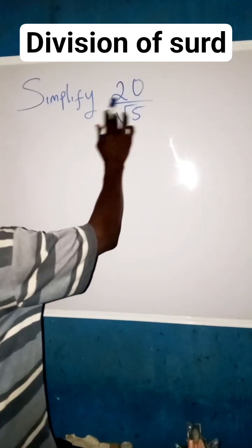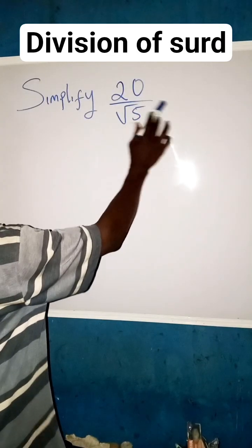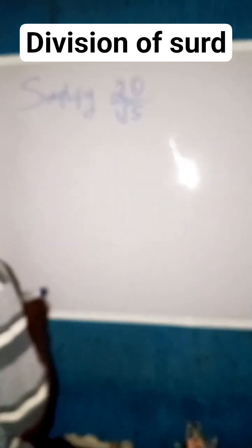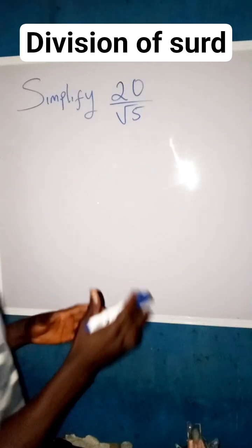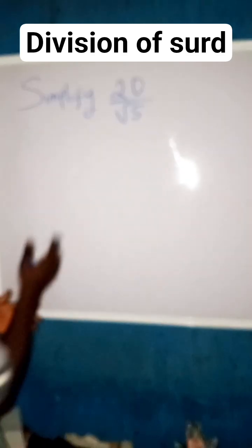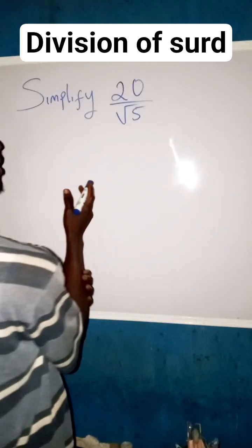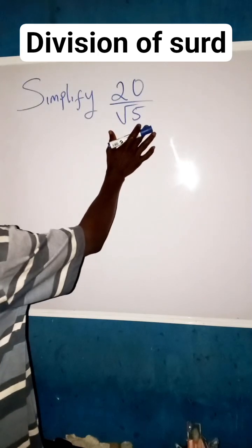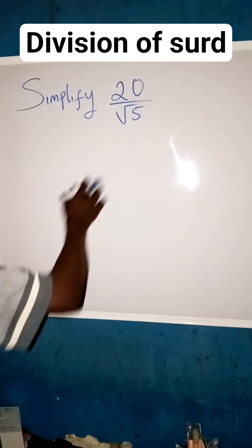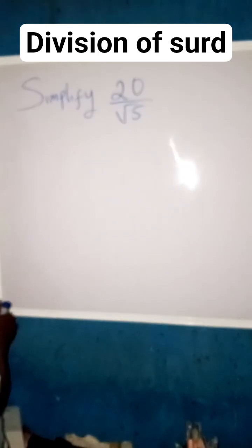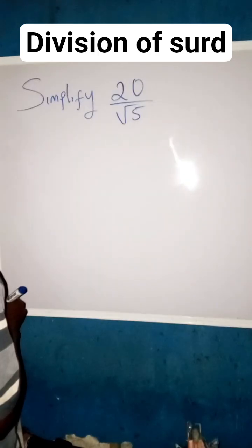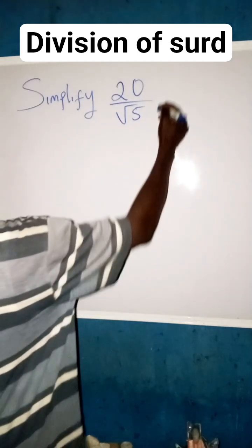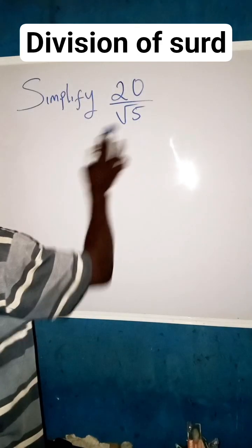Simplify 20 over root 5. The same thing we said in the last class is what we are going to apply here. Whenever we see a division involving a surd, what we are going to do is make use of the denominator to multiply both the numerator and the denominator.